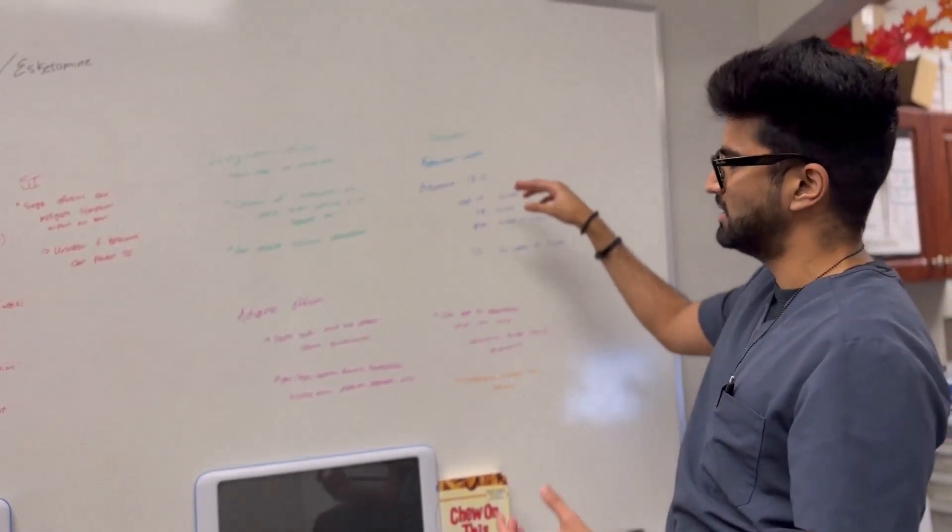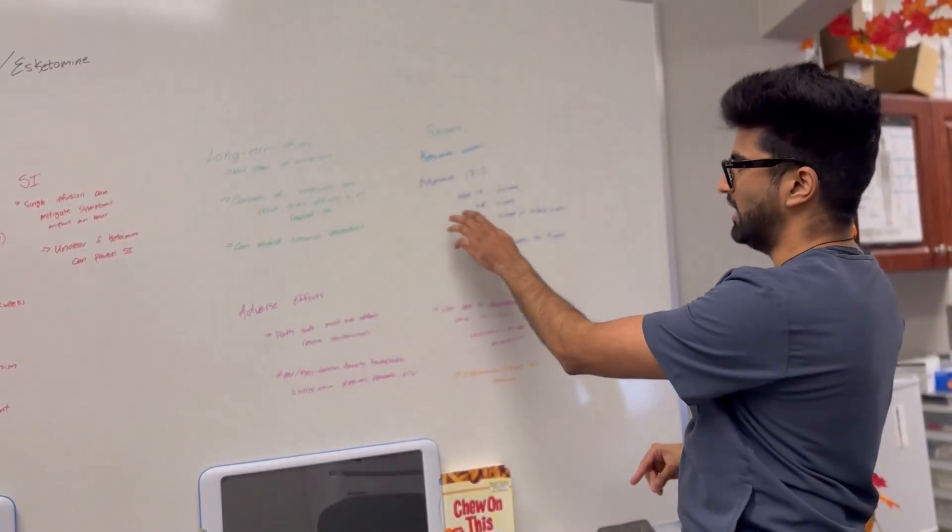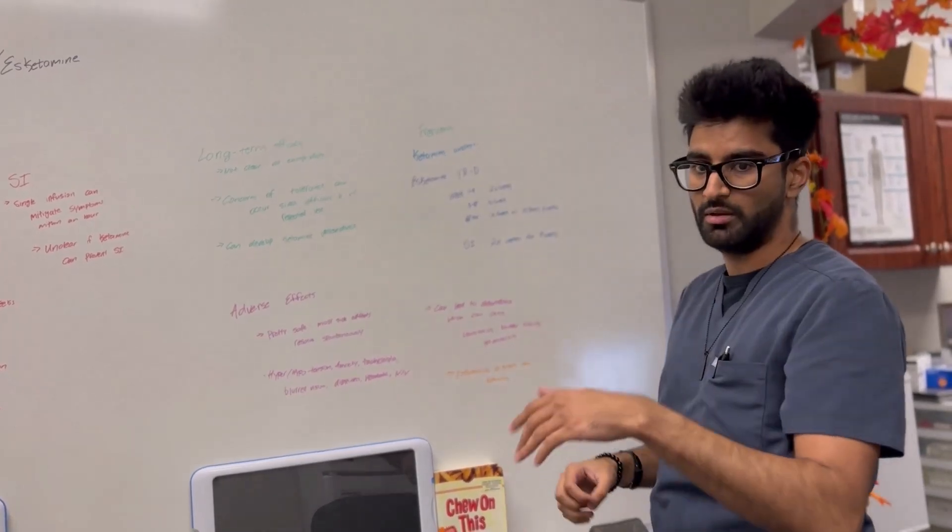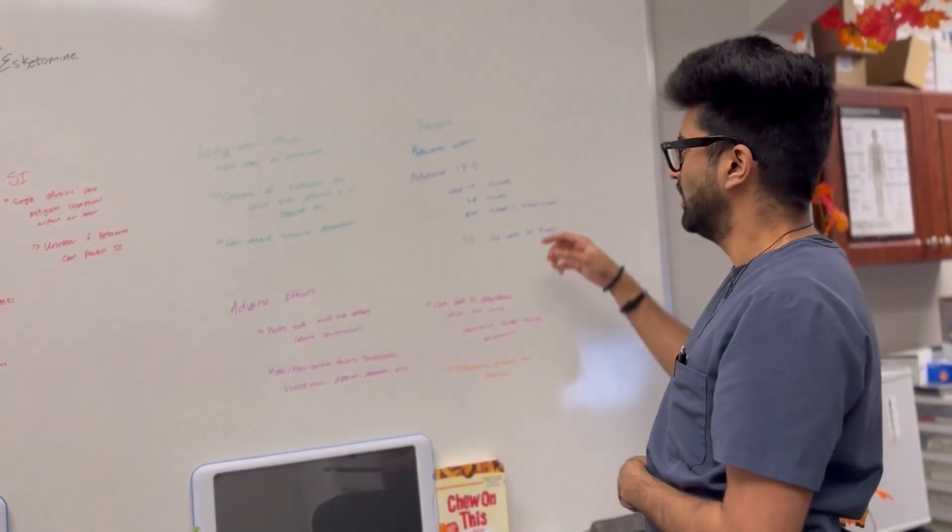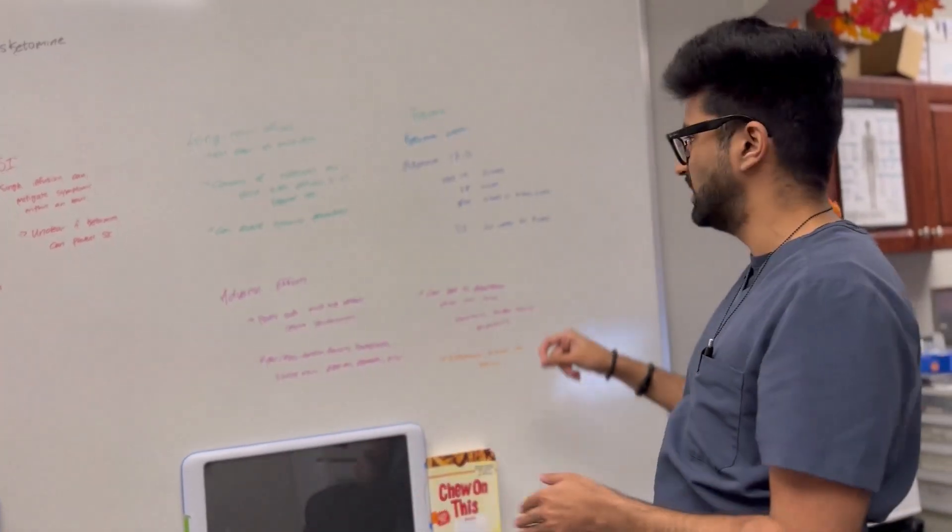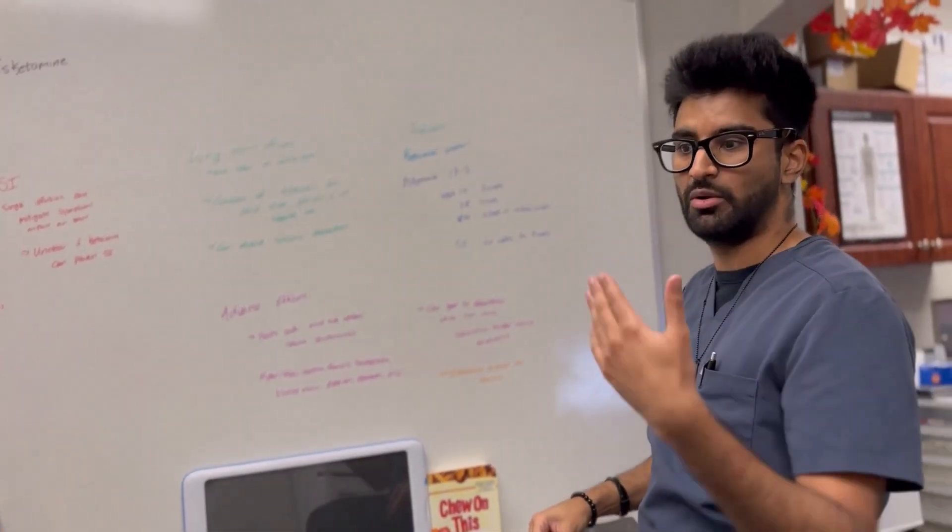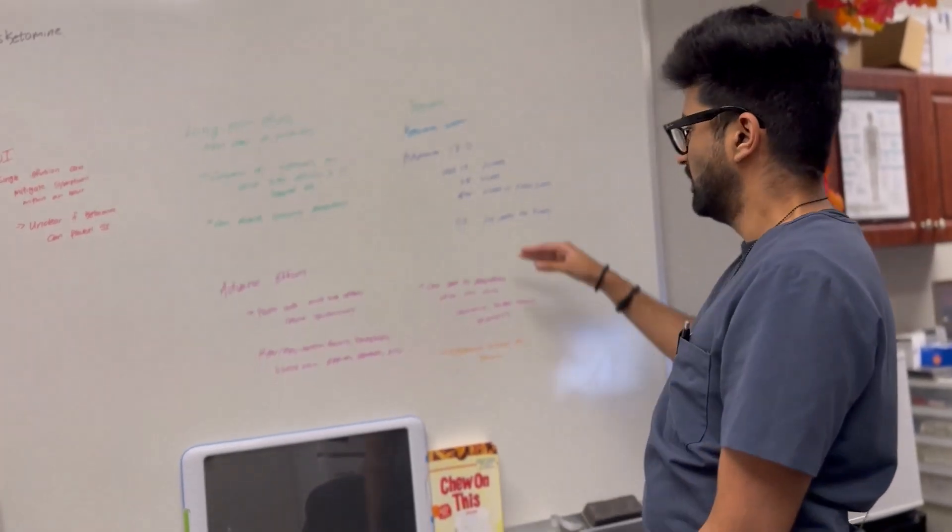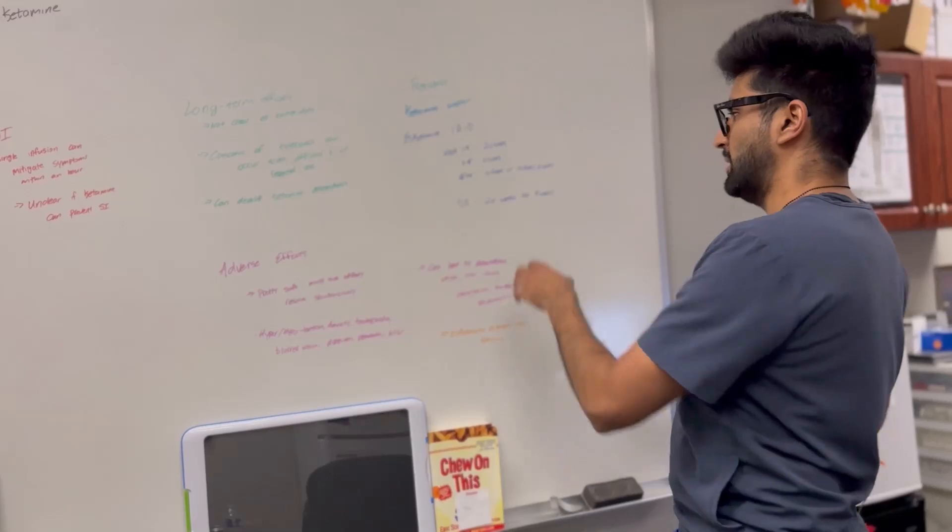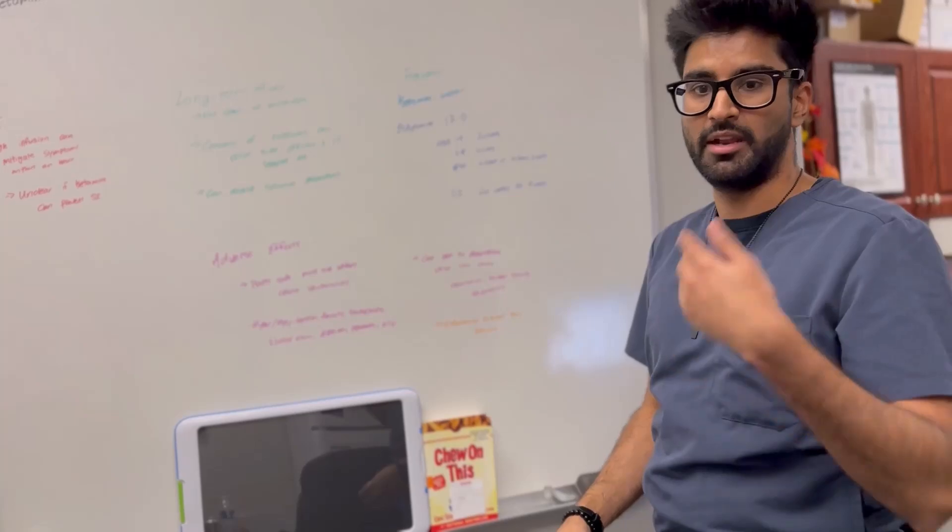...they follow this kind of typical regimen where they'll get for the first four weeks, they'll get twice per week nasal injections or sprays. And then from weeks five to eight, they'll get it once a week. And then thereafter, they'll give them either once a week or once every two weeks, whichever one the patient's tolerating. And then they'll see how it works long term. And if the patient's suicidal, they kind of follow a similar pattern. They just want to do it twice per week for four weeks and then see how the patient's tolerating it and then adjust from there.